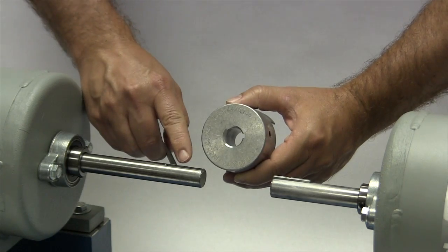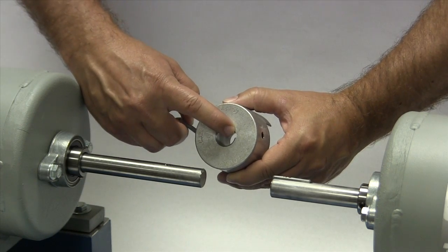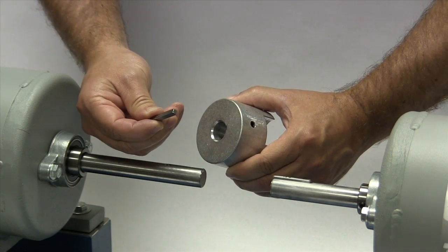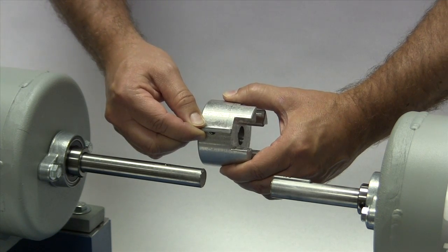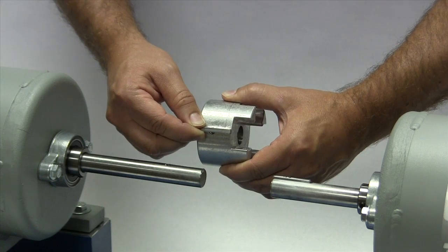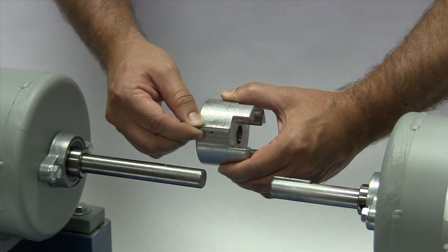If the shaft and the hub both have keyways, make sure you have the appropriate key ready to use when performing this installation. Ideally, the keys should be the same length or slightly longer than the hub to transmit the maximum allowable torque.